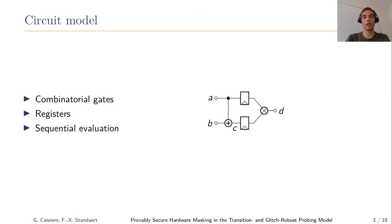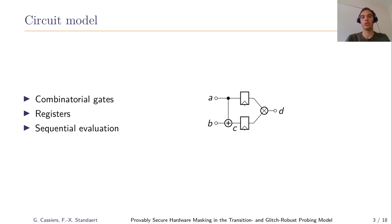I'll start with our circuit model, which uses quite abstract arithmetic circuits in which we have combinatorial gates — such as the XOR gate or the AND gate, which are arithmetic circuit addition and multiplications. We also have the sequential notion of registers, which in practice are implemented by flip-flops, corresponding to a sequential evaluation of the circuits. Here they are represented by boxes.